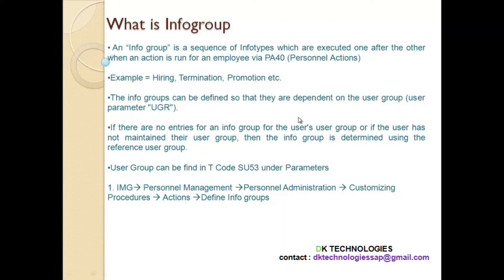These Info Groups can be defined so that they are dependent on the User Group. Don't confuse Info Group with User Group. User Group is nothing but a group of users who have been given similar permissions. So if I belong to User Group X and you belong to User Group Y, you might be permitted for the Info Group called Termination and I might be permitted for the Info Group called Hiring. So if I try to perform a termination action, I cannot, because that Info Group is assigned to your User Group. In big organizations, this User Group is really important.